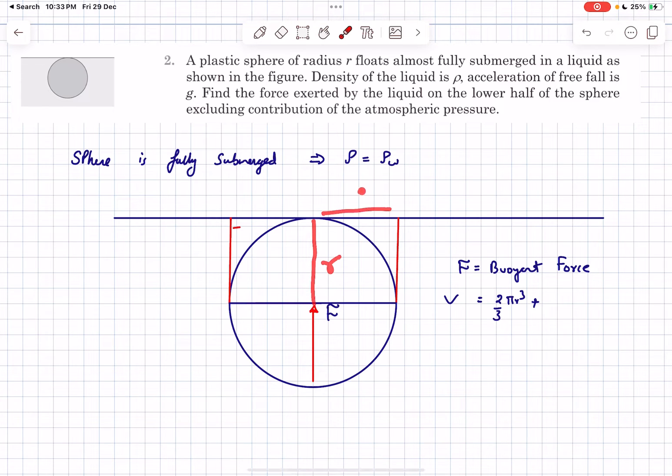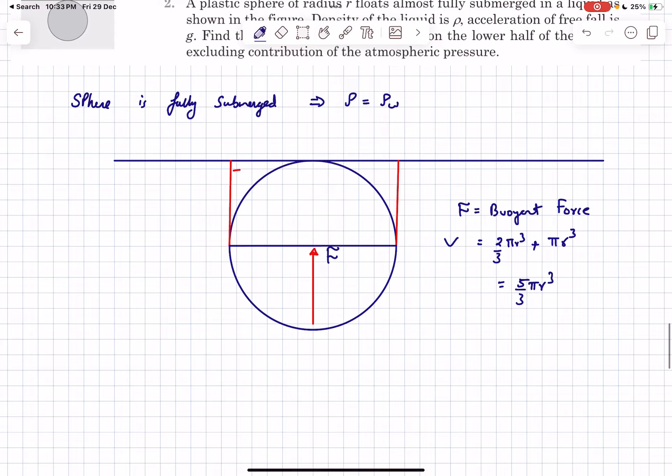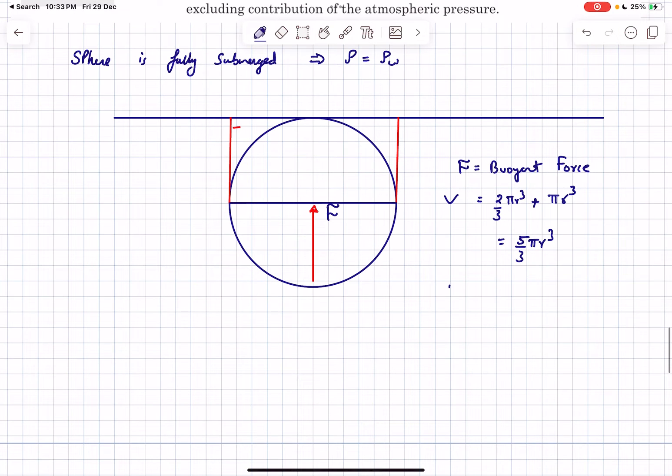The upper part has height r and radius r, so this is simply a cylinder of radius r and height r, and the volume of that is π r³. The submerged volume comes out to be 5/3 π r³.